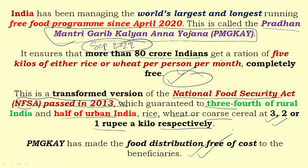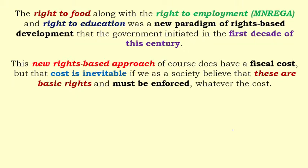This scheme is an extended form of the National Food Security Act, passed in 2013, which provided rice, wheat, and coarse grain to three-fourths of rural and half of urban areas at subsidized rates of three, two, and one rupee per kilo respectively. PMGKY made it completely free. In the first decade of this century, a right-based approach started — right to food, right to employment, right to education — across democratic countries worldwide.